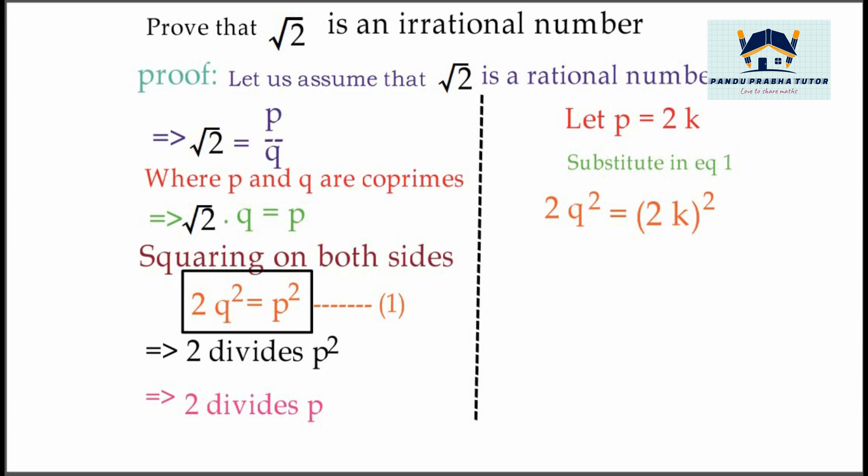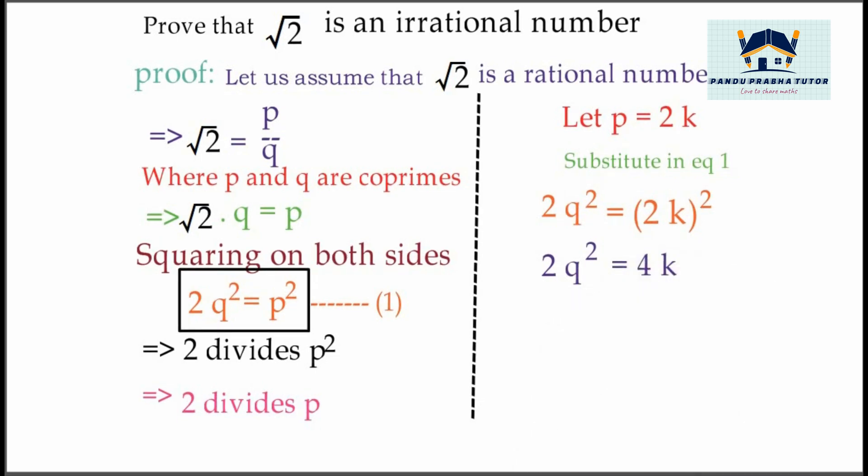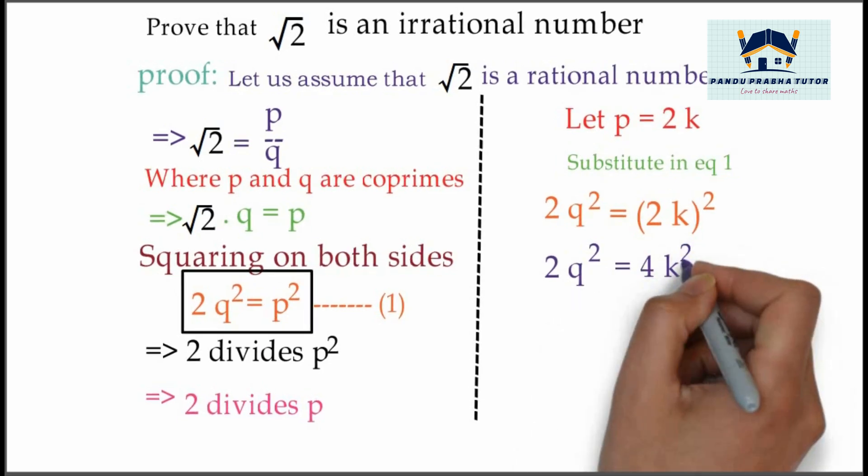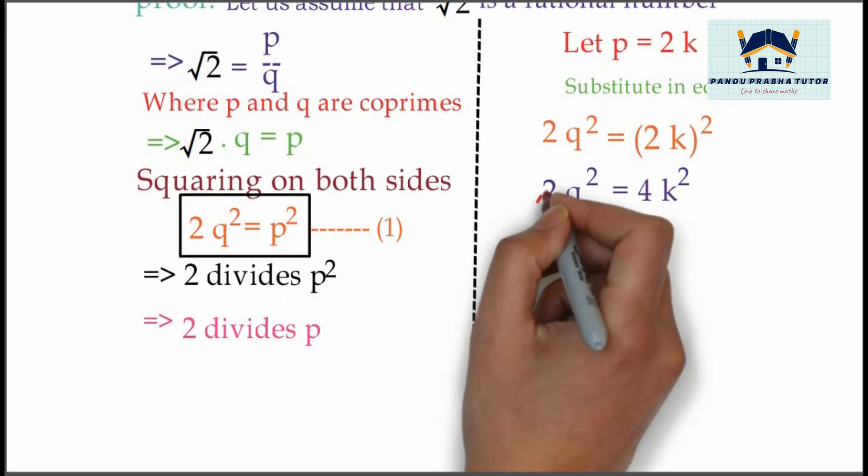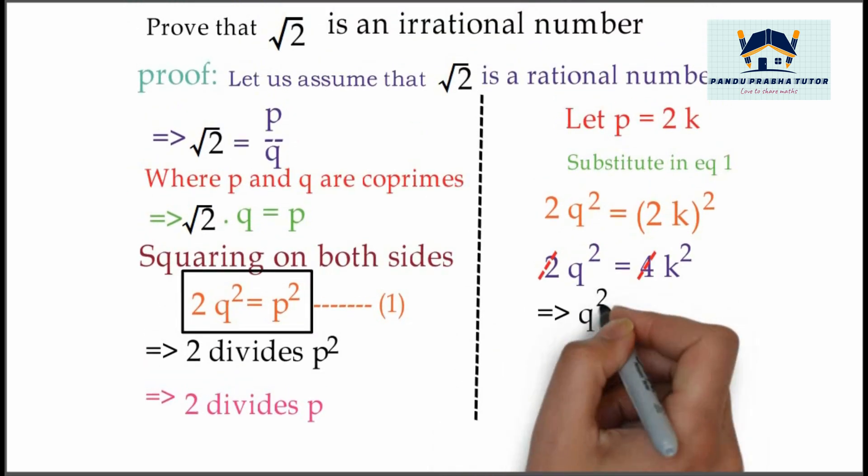2q² = 4k². The 2s cancel, and we get q² = 2k².